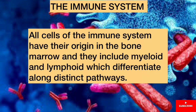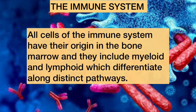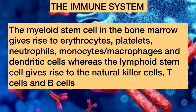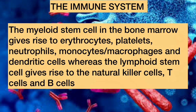All cells of the immune system have their origin in the bone marrow and they include myeloid and lymphoid, which differentiate along distinct pathways. The myeloid stem cells in the bone marrow give rise to erythrocytes, platelets, neutrophils, and monocytes — which happen to be macrophages — and dendritic cells. Whereas the lymphoid stem cells give rise to the natural killer cells, T cells and B cells.